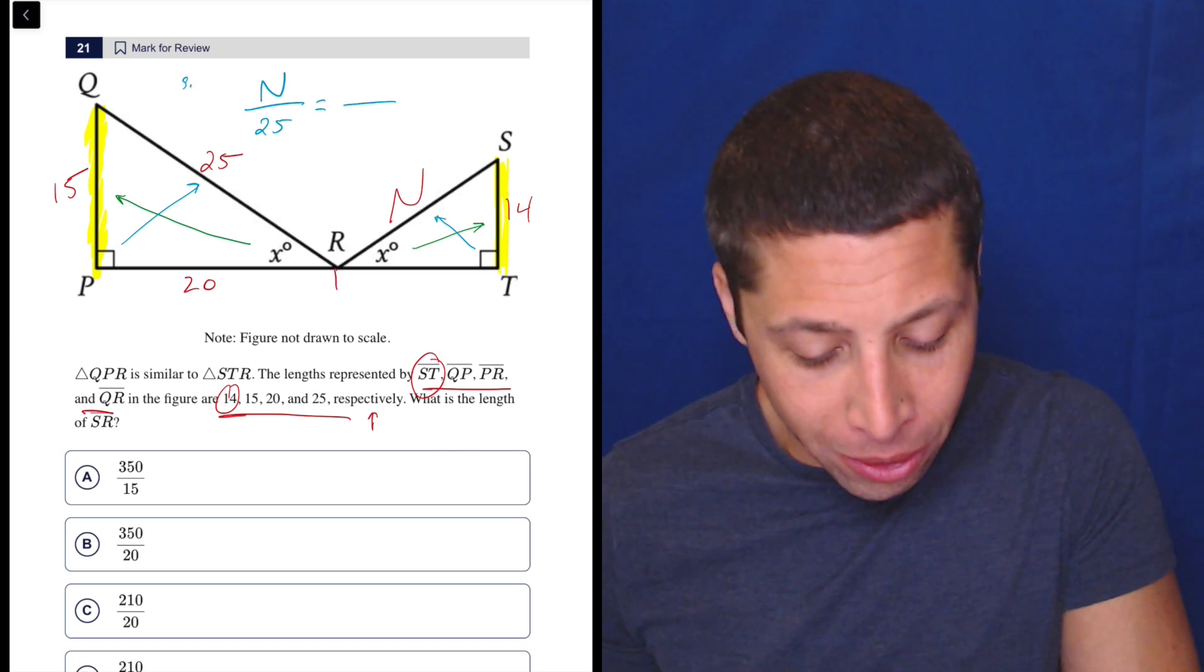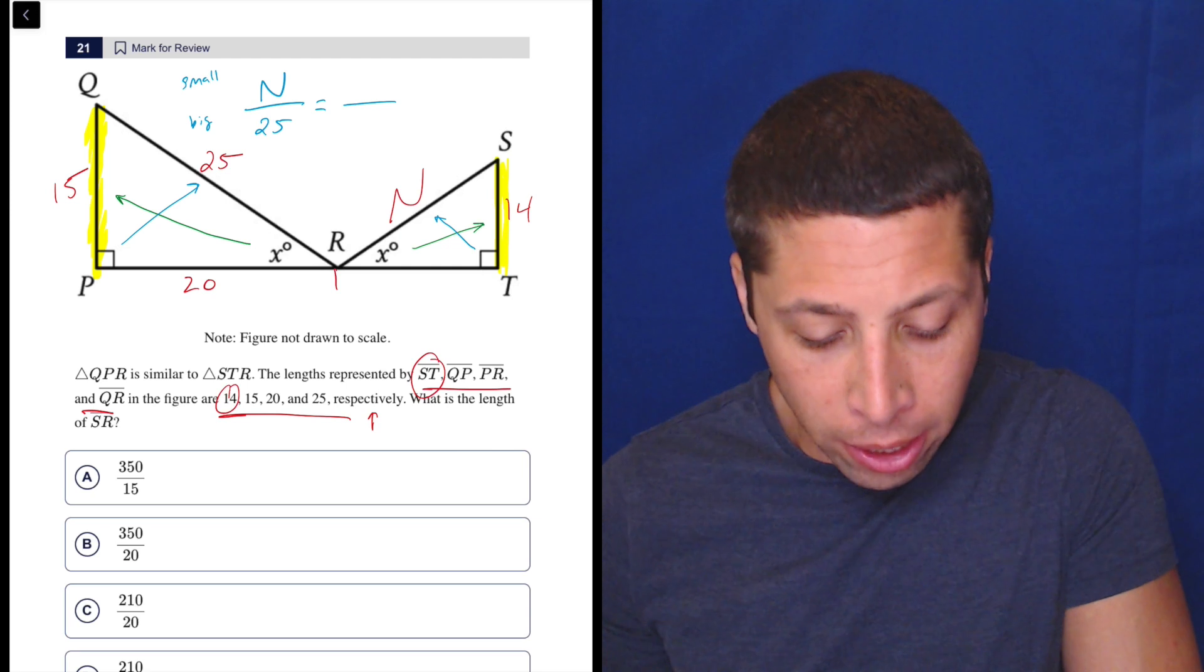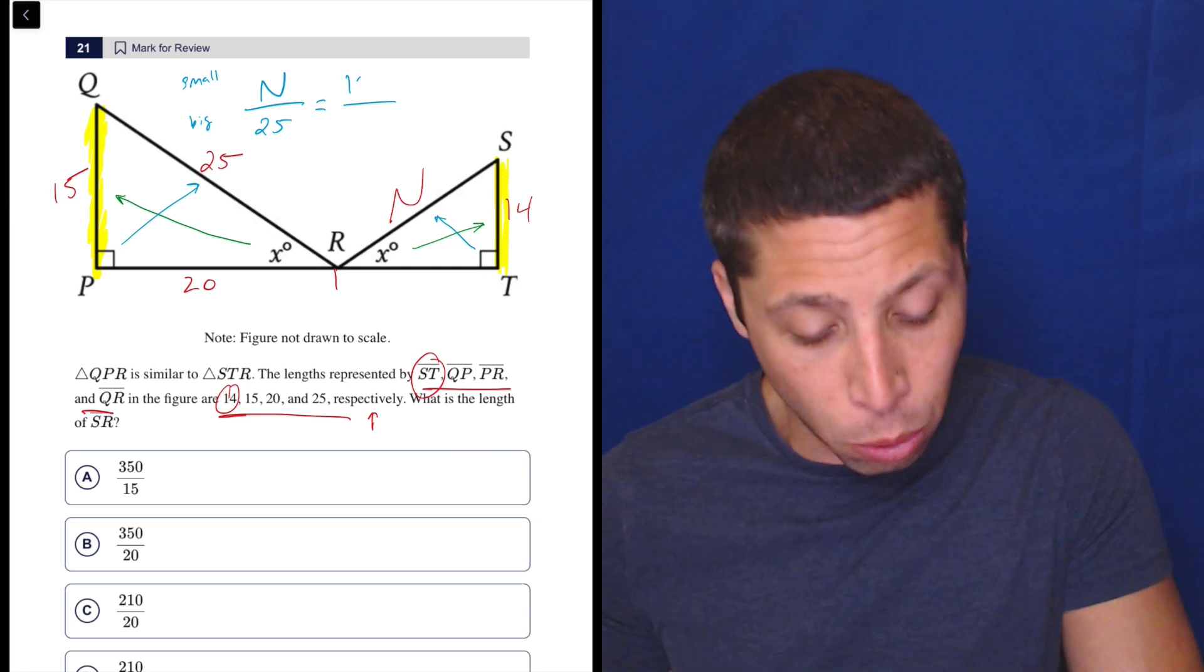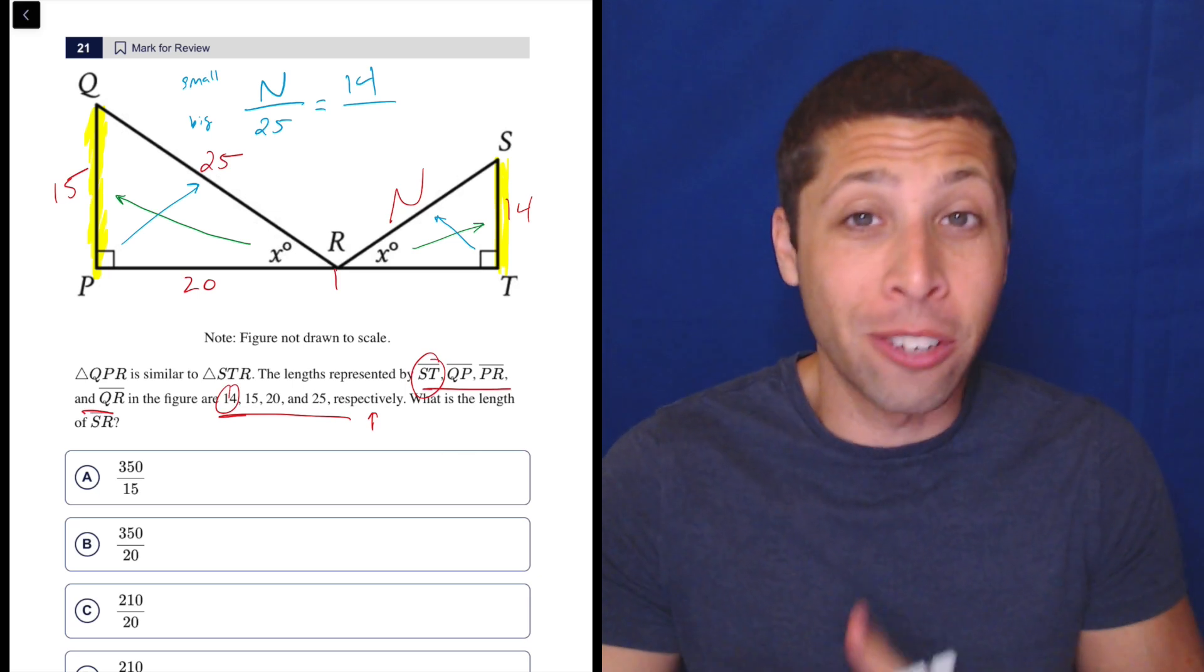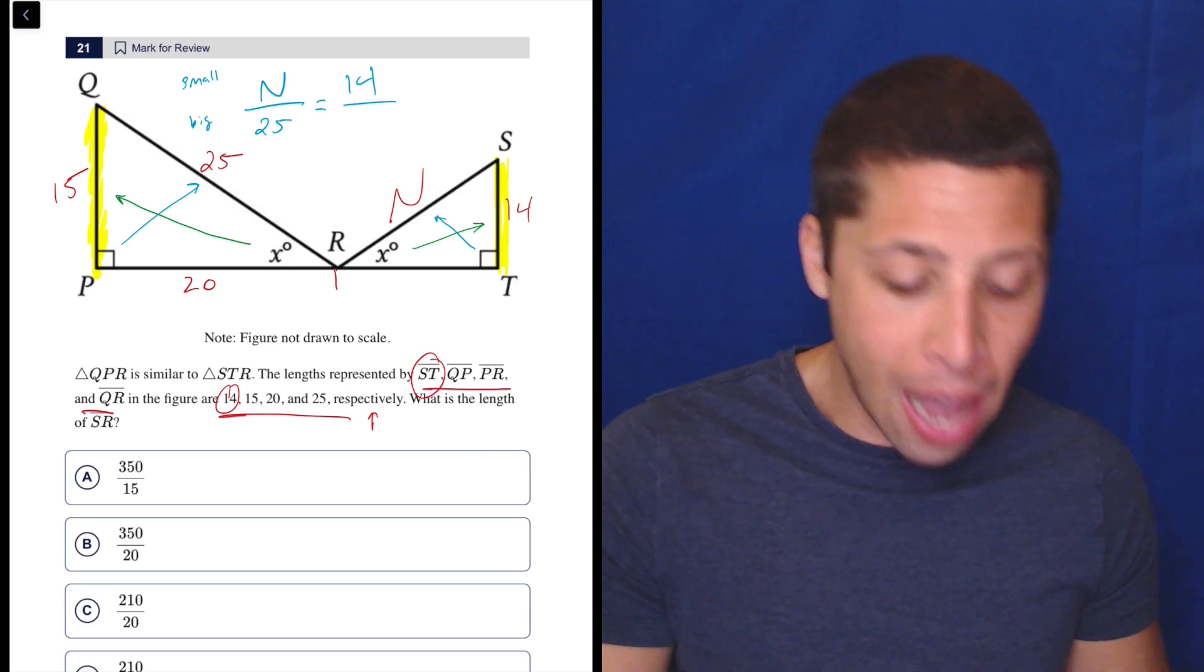So I need to still go with the small triangle on the top and the big triangle on the bottom. Since I only have one side of the small triangle, I'm kind of boxed in here. I'm going to do 14 because I don't really want to have to solve for RT. I don't really have a way to do that easily.